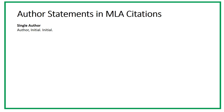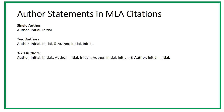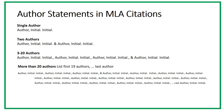In APA, citations begin with the author. Put the author's last names and initials only — do not include the full name. If there are two or more authors, make sure the names are listed in the same order as on the publication, and put an ampersand before the last author. If there are more than 20 authors, list the first 19 authors, put a comma, and then an ellipsis (three periods), then the last author. All of them have the last name and then the initials.